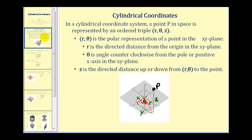In a cylindrical coordinate system a point P in space is represented by the ordered triple R, theta, and Z. R and theta is the polar representation of a point in the XY plane, where R is a directed distance from the origin in the XY plane, theta is the angle counterclockwise from the pole or positive x-axis in the XY plane, and Z is a directed distance up or down from R theta in the XY plane.